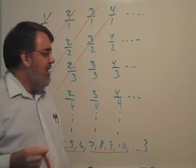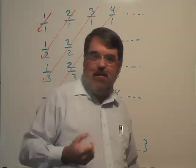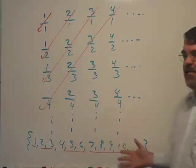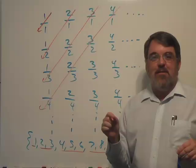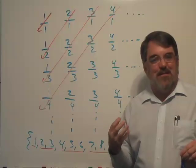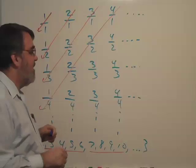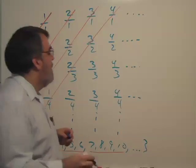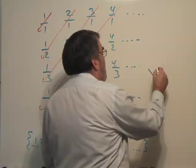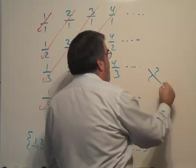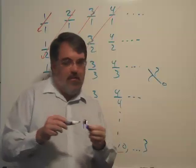Cantor said the cardinality of this set—and cardinality means the size of the set—he called it Aleph Null. He said Aleph Null is the smallest cardinal number, the smallest infinity that we can dream up. Aleph is the first letter of the Hebrew alphabet. It looks kind of like this—not exactly an X, but it's Aleph. Aleph Null would have a zero as a subscript.